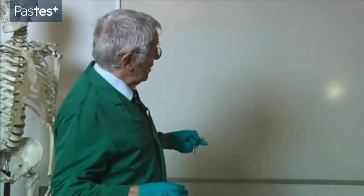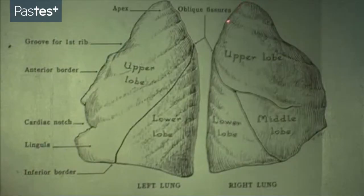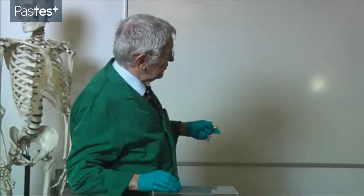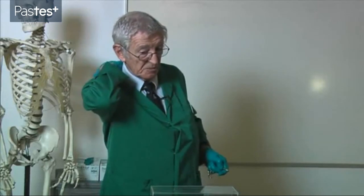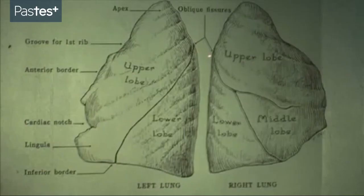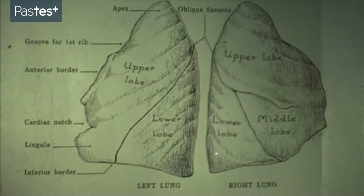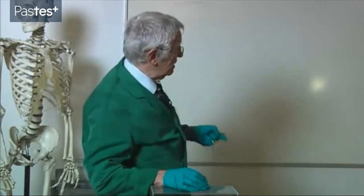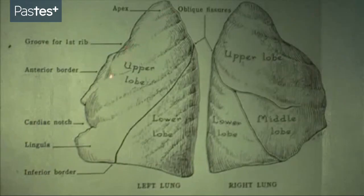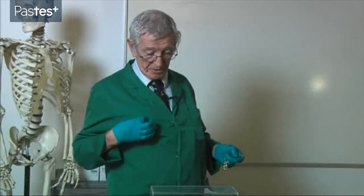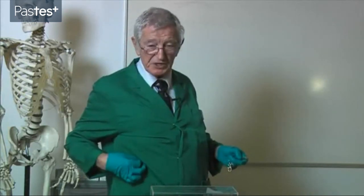When you turn the patient round and examine the back of the chest - and I'll show you this again in the specimen - up at the top you're listening into the upper lobe, but when you get to about the third rib, which is the spine of the scapula, you're now starting to examine the lower lobe. So just examining the front of the patient's chest and saying the chest is clear means all you've been able to confirm is that the upper lobe is clear on the left side. On the right side: upper lobe, middle lobe, and just a tiny little bit of lower lobe.